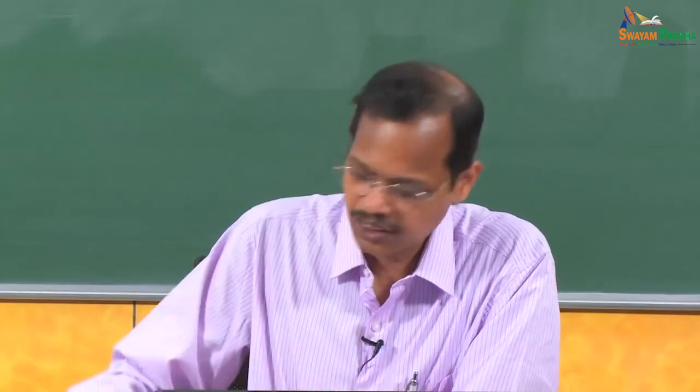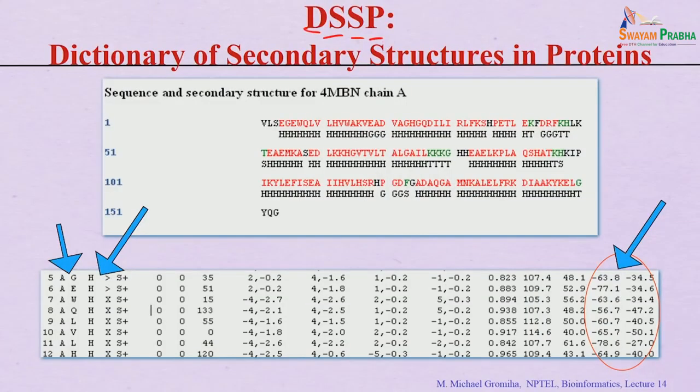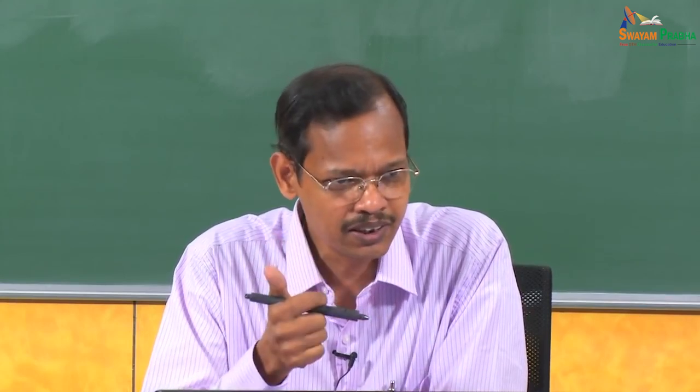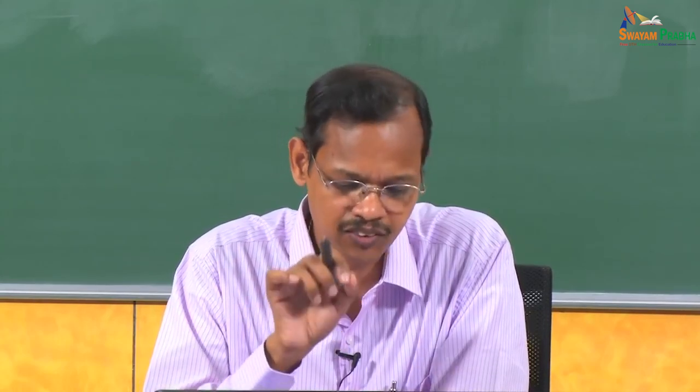In 1983, Kabsch and Sander developed a program called DSSP — the Dictionary of Secondary Structure of Proteins. To analyze known 3D structures, they are not doing any prediction; they take real structures from the Protein Data Bank, check the hydrogen bonding pattern, and from the phi/psi angles assign each residue to 8 different secondary structure categories: three types of helices, two types of strands, one bend, one turn, and one coil.